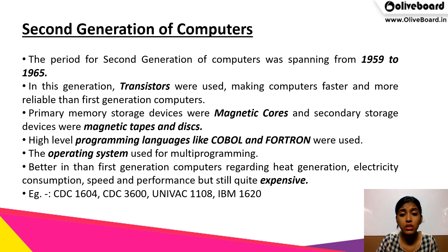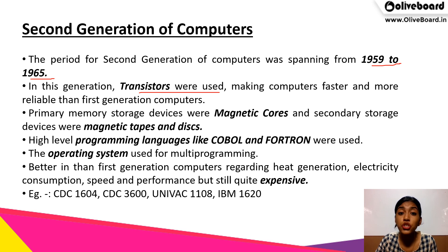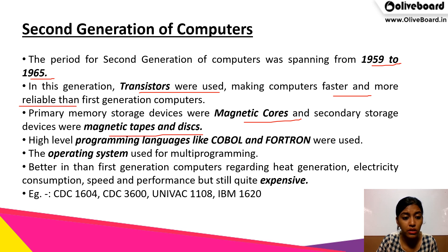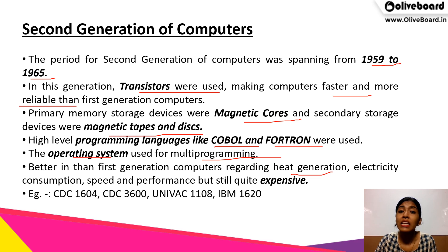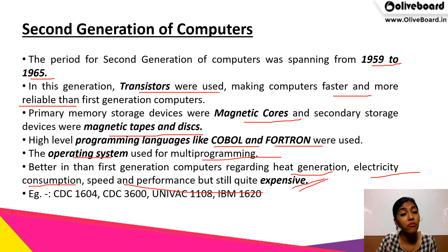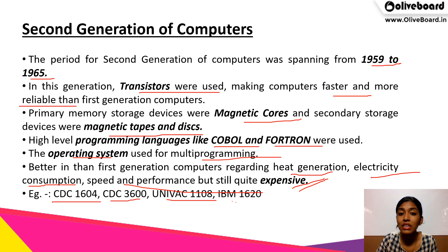The second generation computers spanned from 1959 to 1965. In this generation, transistors were used for the first time, which made computers work faster and more reliable than the first generation computers. Primary memory storage devices like magnetic cores, magnetic tapes and disks were invented during this period. High-level programming languages COBOL and FORTRAN were also used in these second generation computers. The operating system also came up and enhanced multi-programming. Examples are CDC 1604, CDC 3600, UNIVAC 1108 and IBM 1620.